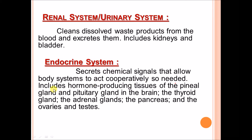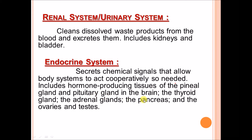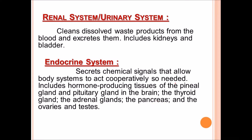The endocrine system includes hormone-producing tissues and glands such as the pituitary gland, thyroid gland, adrenal gland, and others. These glands secrete hormones into the body which circulate throughout the whole body.